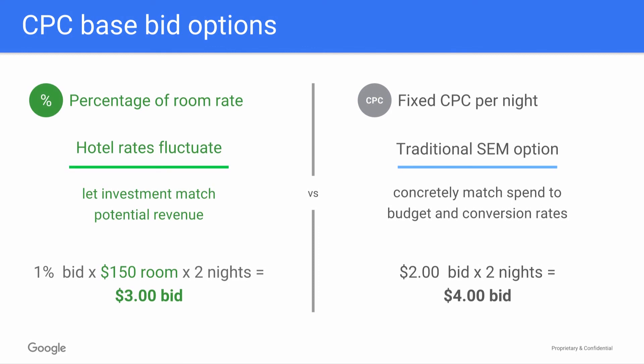In most cases when you're using CPC, we recommend using percentage of room rate bidding because it tailors your willingness to pay to the revenue of the room being booked. In other words, more expensive rooms automatically get higher bids.